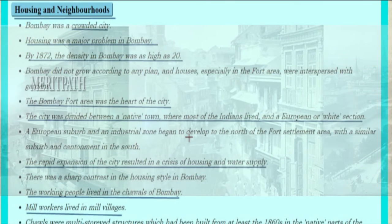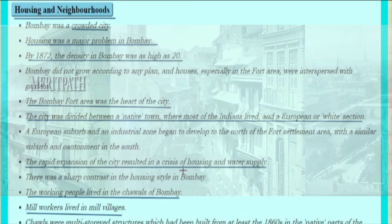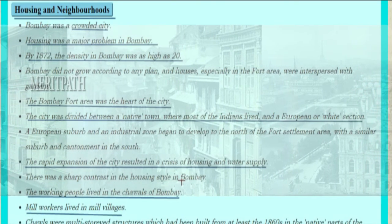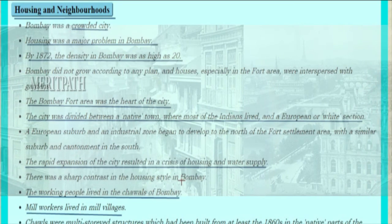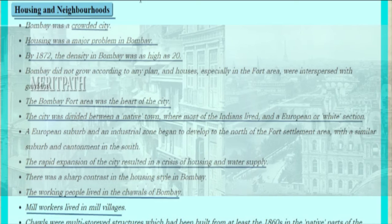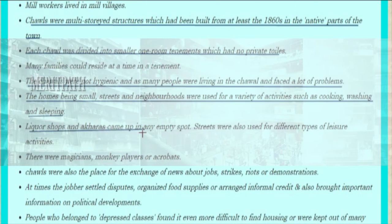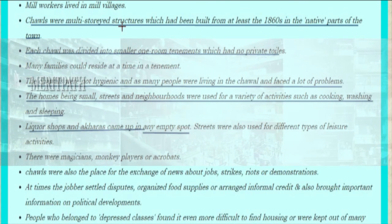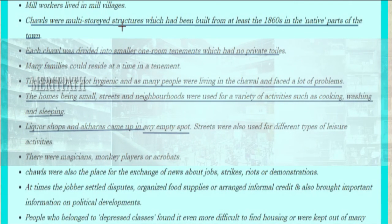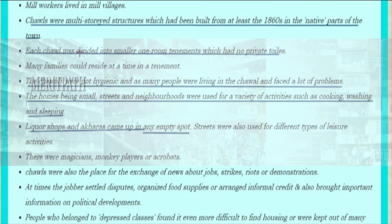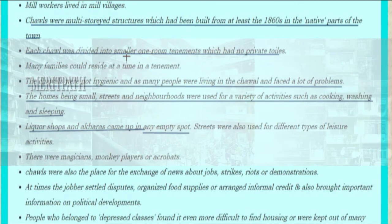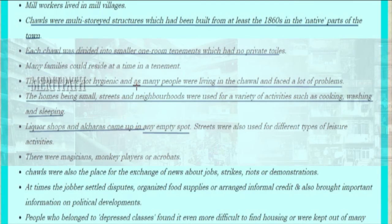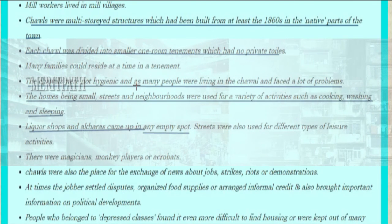Rapid expansion of the city resulted in a crisis of housing and water supply. There was a sharp contrast in housing styles in Bombay. Working people lived in the chals of Bombay, while mill workers lived in mill villages. Chals were multi-storied buildings built from at least the 1860s in the native parts of town. Each chal was divided into smaller one-room tenements with no private toilet, and many families could reside in a single tenement. The chals were not hygienic.